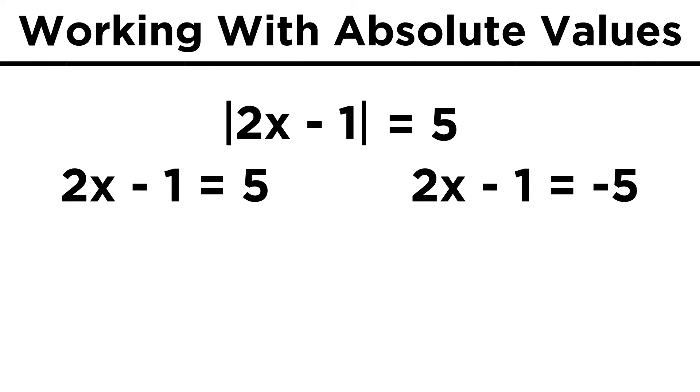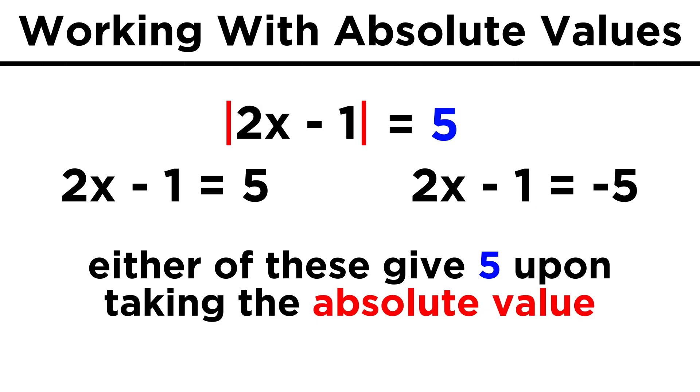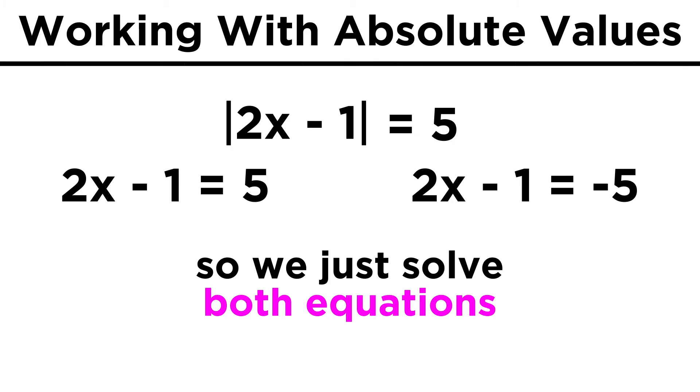It could either be the case that 2x minus 1 equals 5, or 2x minus 1 could equal negative 5, because once we take the absolute value, we get 5 either way. That means we now have to solve both of these equations to get the two possible values of x.